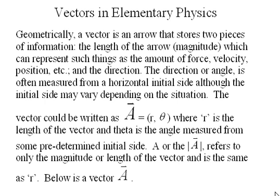The direction or angle is often measured from a horizontal initial side, although the initial side may vary depending upon the situation. The vector could be written as a with a little arrow on top. It could equal r, which is its length, and theta, which is its angle from some predetermined initial side.